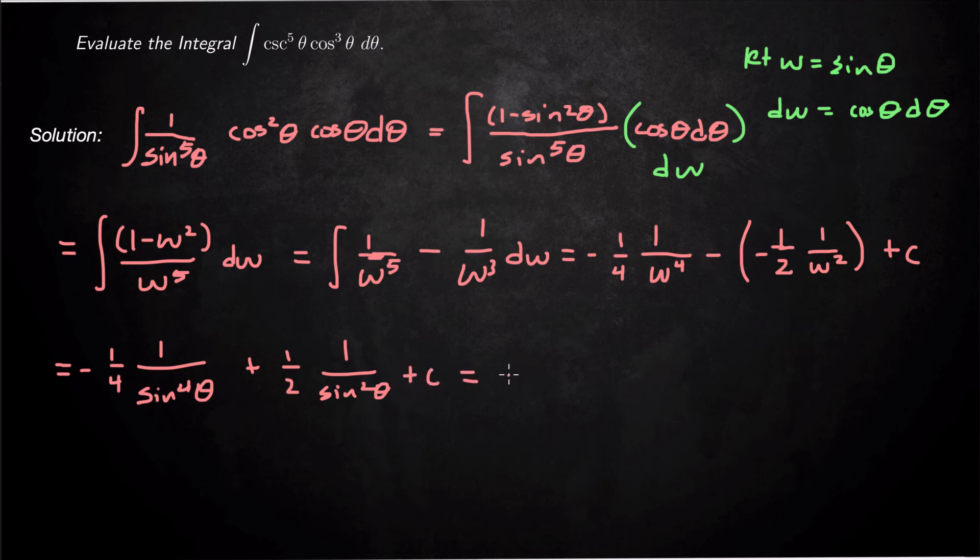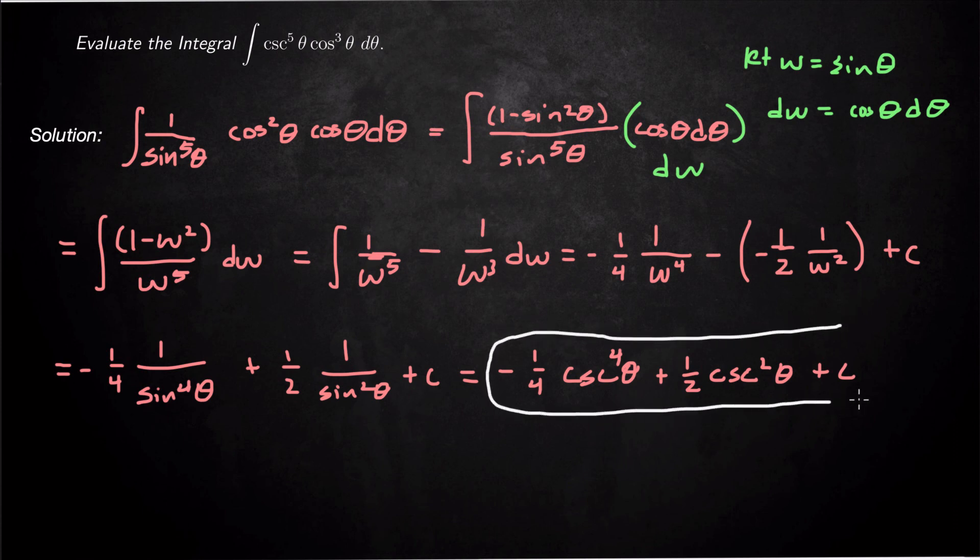And you can convert that back to cosecant and say, that's negative 1 over 4 cosecant theta to the fourth power plus one-half cosecant squared theta plus C. And that's how we do it. Basically the same strategy applies. I just first had to turn everything into sine and cosine. That's how we do it.